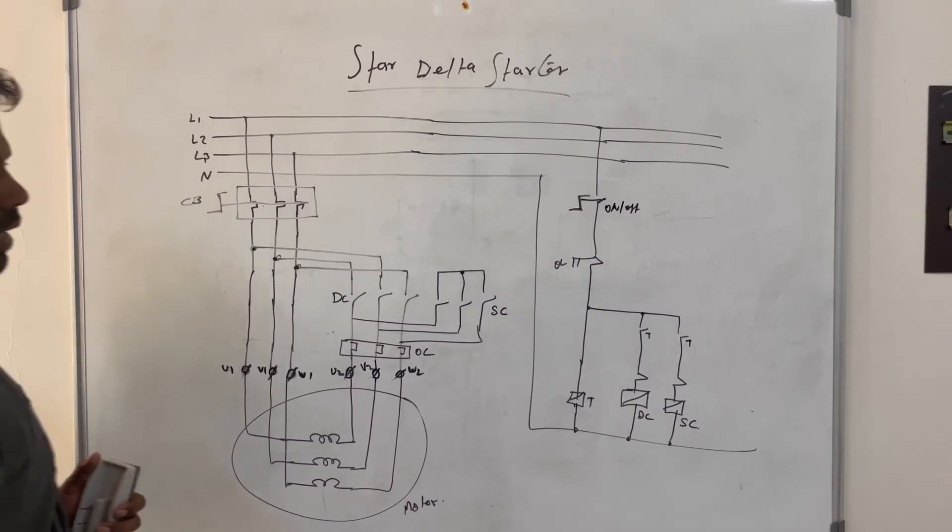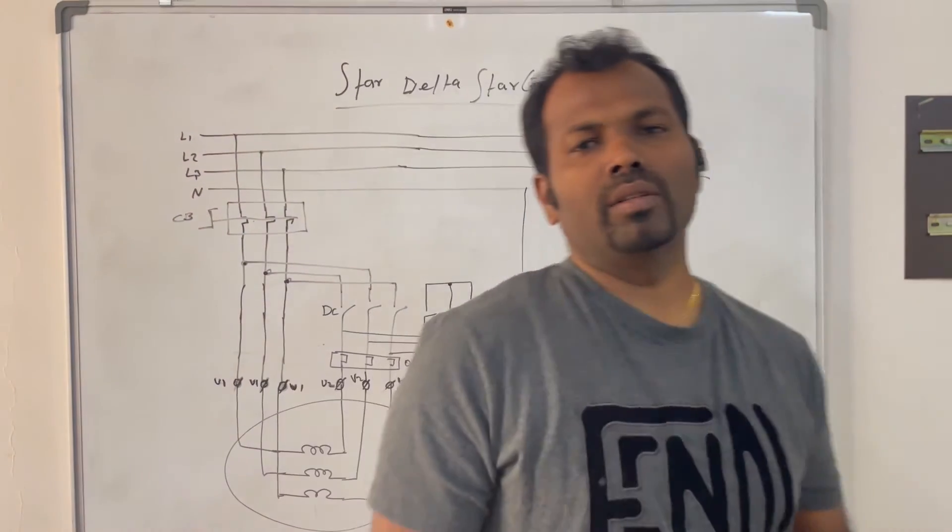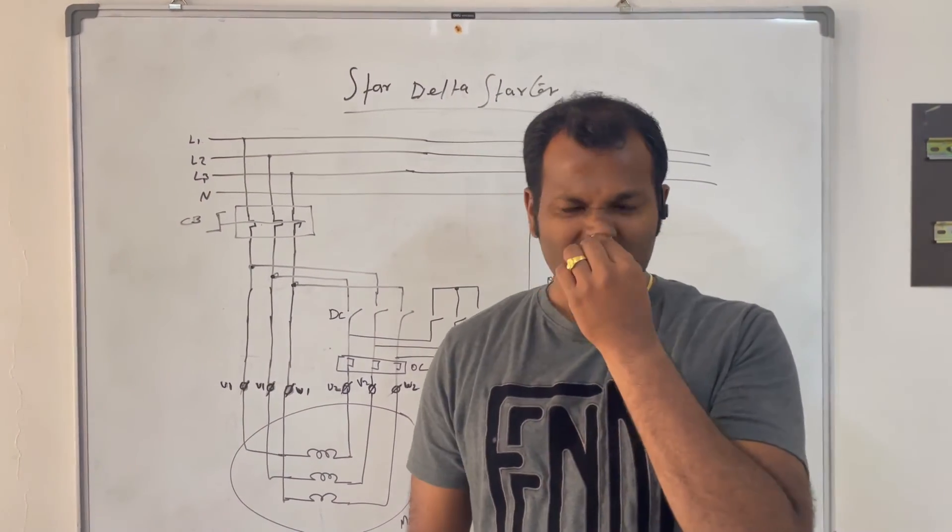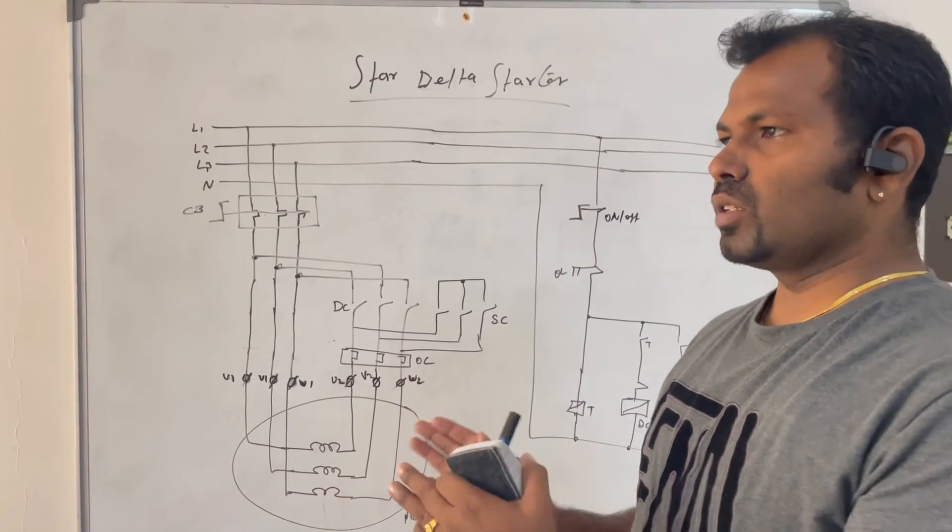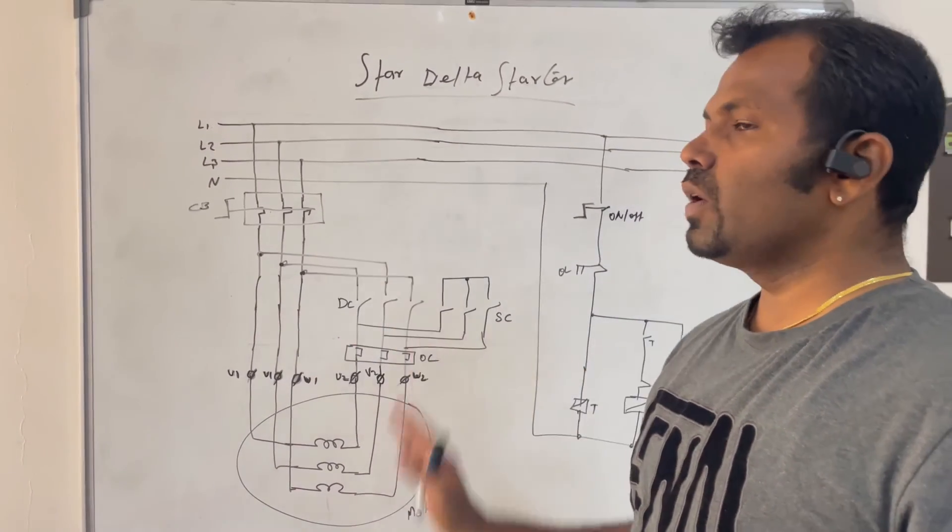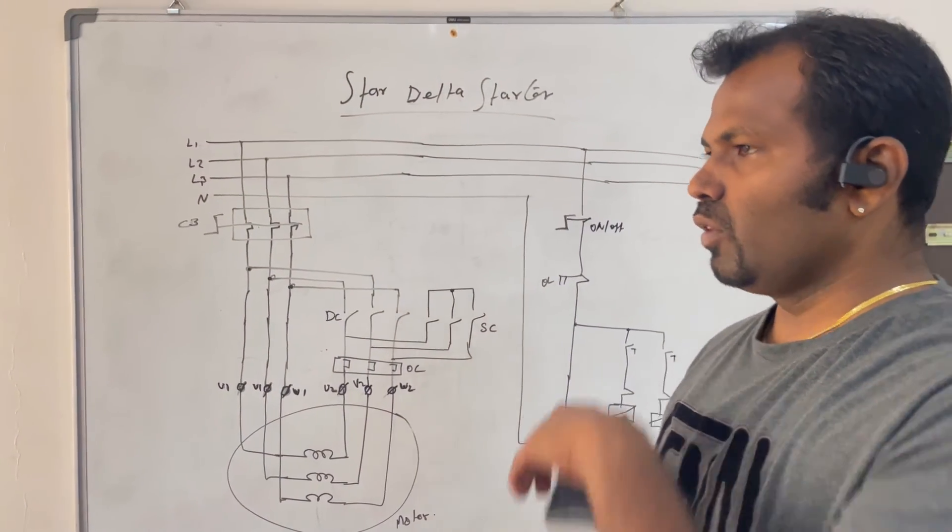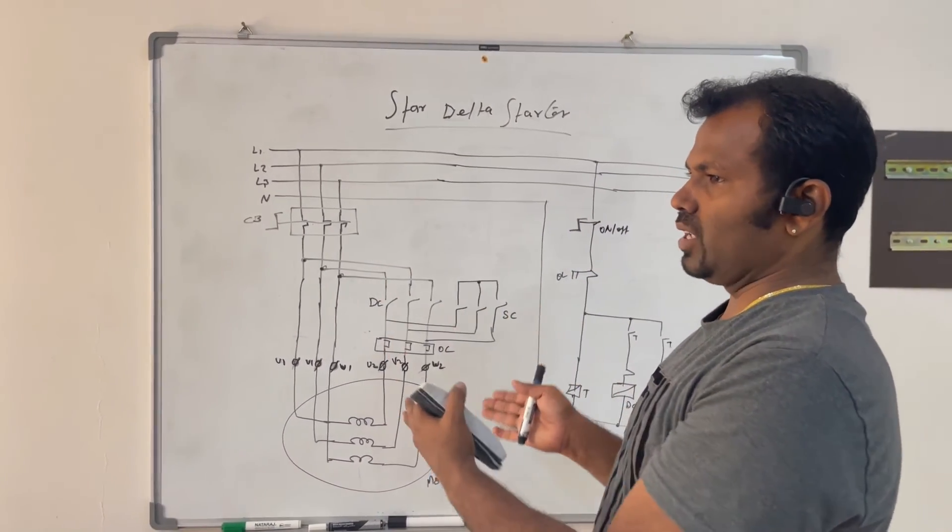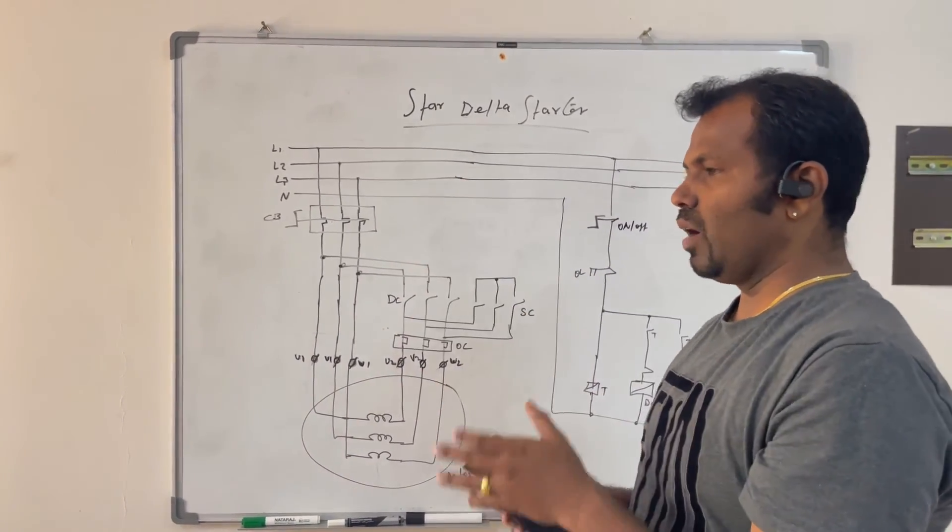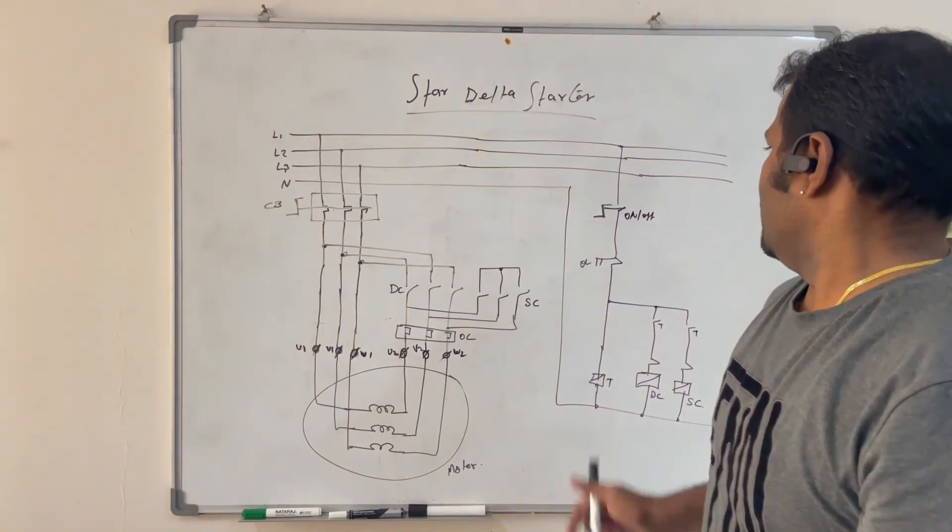But the main issue is, we will see first advantages. The main advantage is you can reduce the cost by removing the main contactor. Also if you make in control panel, you can reduce the space also. So you can make a little bit smaller. So main thing is you can reduce the cost.